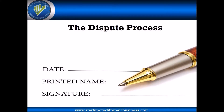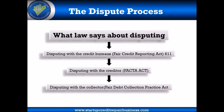So what does the law say about disputing? Disputing with the credit bureaus falls under the Fair Credit Reporting Act, Section 611 — this is the act that regulates credit bureaus. Here's what it says: any consumer has a right to dispute anything that they feel is inaccurate on a credit report.